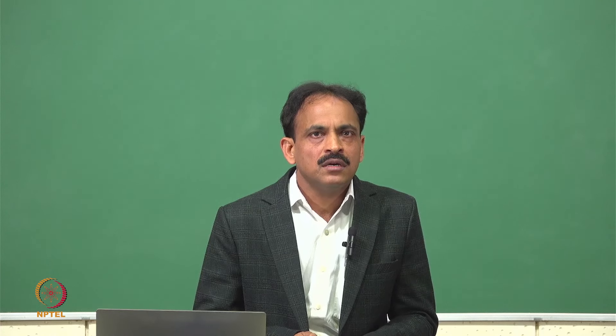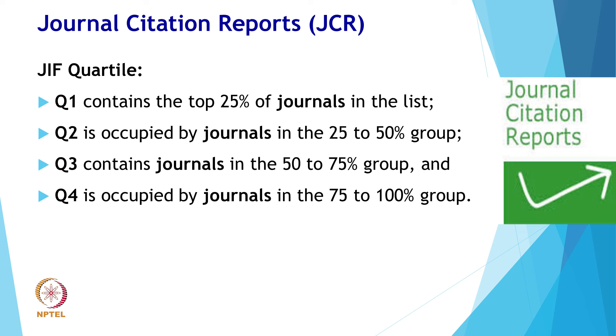A journal's quartile ranking is determined by comparing a journal to others in its JCR category based on the impact factor score. Each subject category of journals is divided into four quartiles: Q1, Q2, Q3, and Q4. Q1 contains the top 25% of journals in the list; Q2 is occupied by journals in the 25 to 50 percent group; Q3 contains journals in the 50 to 75 percent group; and Q4 is occupied by journals in the 75 to 100 percent group. If a journal falls in Q1, it means the journal performs better than at least 75% of journals in the category based on its impact factor score.